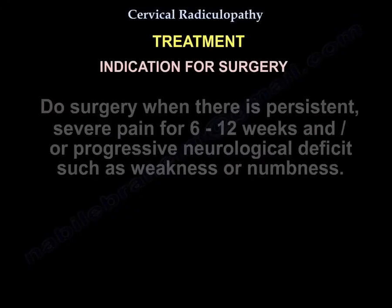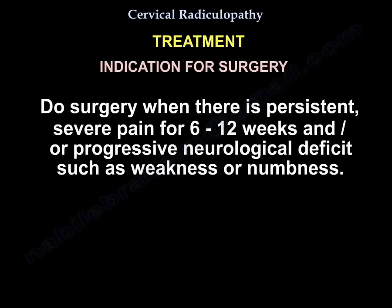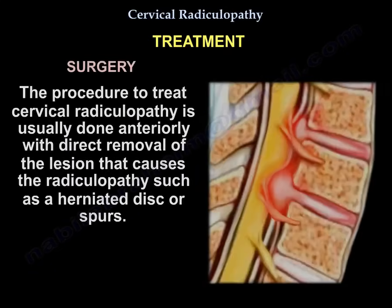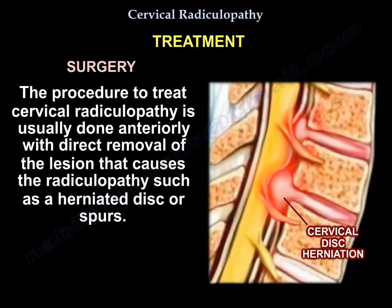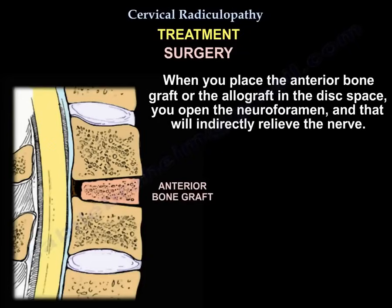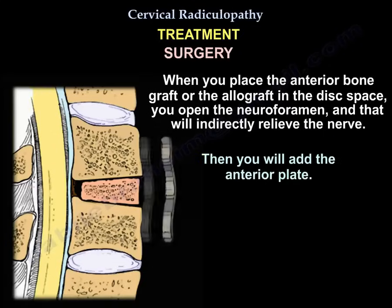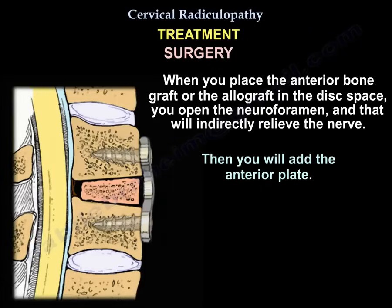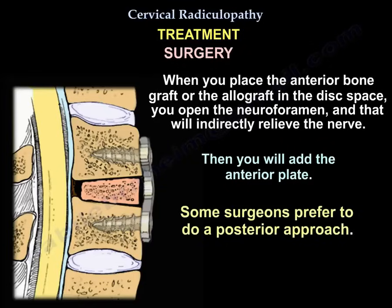Surgery is indicated when there is persistent severe pain for 6-12 weeks and/or progressive neurological deficit such as weakness or numbness. The procedure is usually done anteriorly with direct removal of the lesion causing radiculopathy, such as a herniated disc or bone spurs. When an anterior bone graft or autograft is placed in the disc space, it opens the neuroforamen and indirectly relieves the nerve. An anterior plate is then added. Some surgeons prefer a posterior approach.